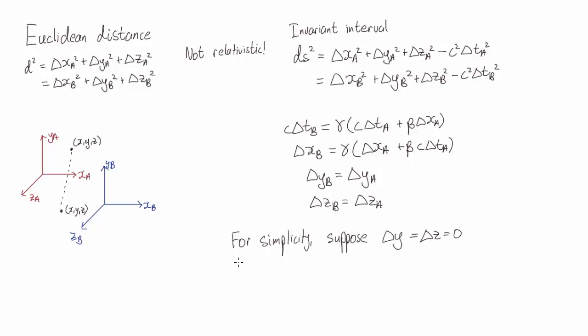So for simplicity, let's assume the two events occurred along the x-axis. So there's no separation in y, there's no separation in z. And let's look at the three cases for if ds squared is greater than zero, equal to zero, or less than zero.